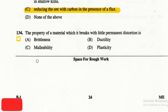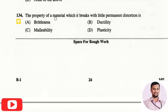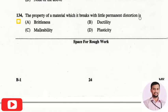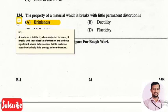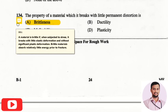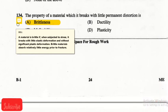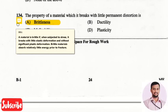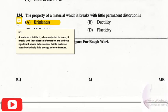The next question is: the property of a material by which it breaks with little permanent distortion is? The right answer is option one, brittleness. A material is brittle if, when subjected to stress, it breaks with little elastic deformation and without significant plastic deformation. Brittle materials absorb relatively less energy prior to fracture.